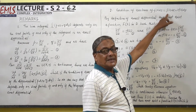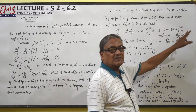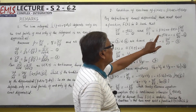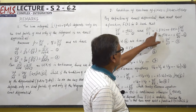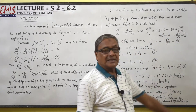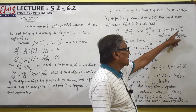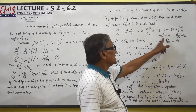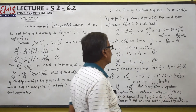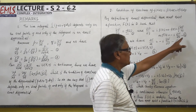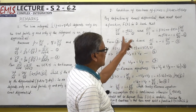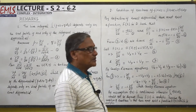From ∂F/∂y equals i·f(z), this implies f(z) equals (1/i)·∂F/∂y. And 1/i equals minus i, so f(z) equals minus i·∂F/∂y (equation 4). From equations 3 and 4, we have ∂F/∂x equals minus i·∂F/∂y (equation 5).